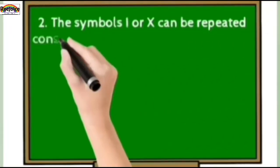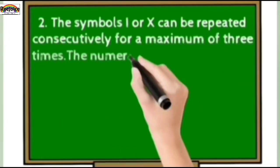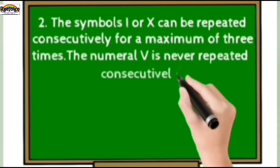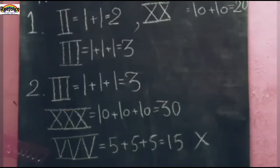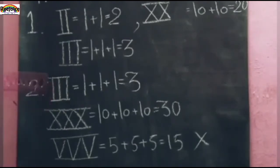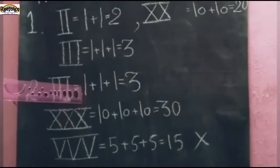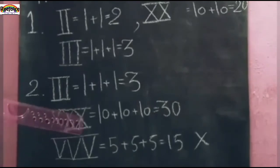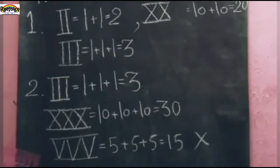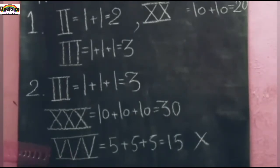Rule number 2: the symbols I or X can be repeated consecutively for a maximum of 3 times. The numeral V is never repeated consecutively. Rule 2 में — I or X maximum 3 times repeat हो सकता है, but V 2 times भी repeat नहीं हो सकता, वो बस 1 time लिखा जाता है। Example: III — 3 times repeat है तो 1 plus 1 plus 1 equals 3. XXX — 10 plus 10 plus 10 equals 30. VVV — यह wrong होगा, V को 2 या 3 times नहीं लिख सकते।